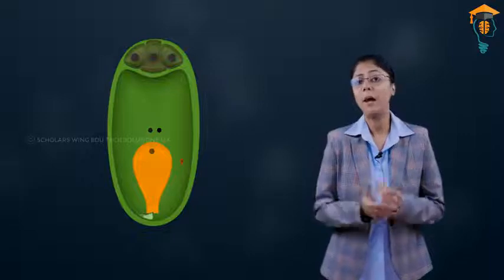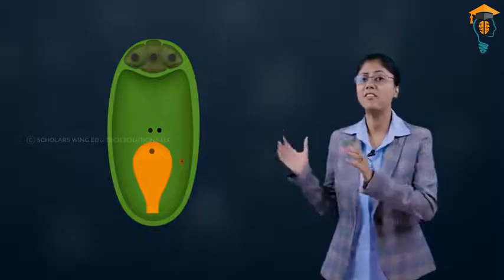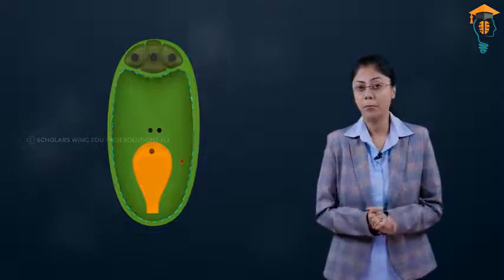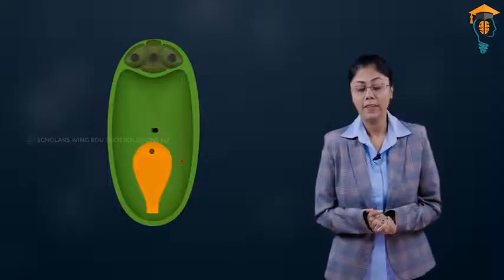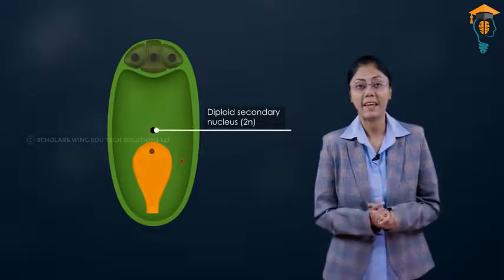So what happens to the other male gamete? To understand that, we will first have to see the structure of this embryo sac. In the embryo sac, the central cell contains the two polar nuclei. After some time, the two polar nuclei get fused and it forms the diploid secondary nucleus.